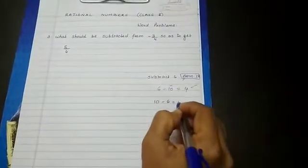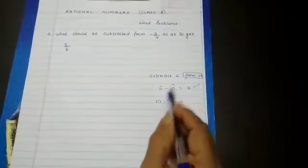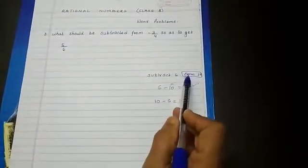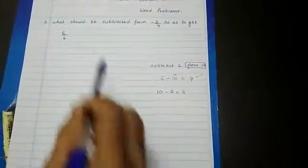So it is 10 minus 6, 4. So you understood? Whatever number comes after from, that should be written first. Now you will understand the sum easily.